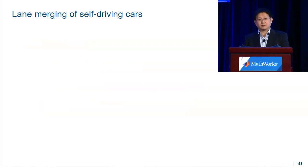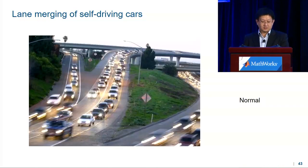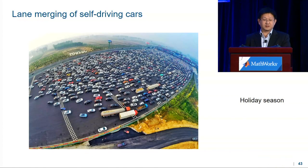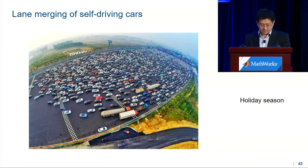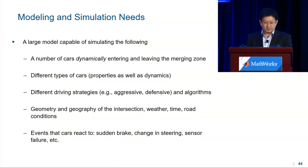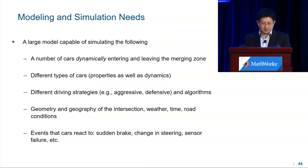Let's see a very practical example: lane merging of self-driving cars. Typical traffic, an emergency with a lane closed, or even 50 lanes of cars trying to merge together — you want your model to simulate all these scenarios without too much change. We need a large model capable of simulating: a number of cars dynamically entering and leaving the merging zone, different types of cars plus different drivers, different geometric situations like weather, time, and road conditions, and events that cars have to react to, like sudden braking, steering changes, and sensor failure.